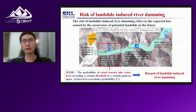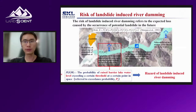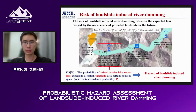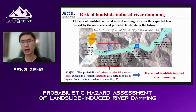The risk of landslide-induced river damming refers to the expected loss caused by the occurrence of potential landslide-induced river damming in the future. It includes four probabilities and one consequence: the probability of the occurrence of the landslide, the probability of a point being submerged, the probability of elements at risk being at that point, and the vulnerability of those elements. The probability of the barrier lake water level exceeding a certain threshold at a certain point is discussed today as an indicator of landslide-induced river damming hazard.